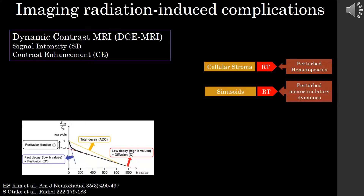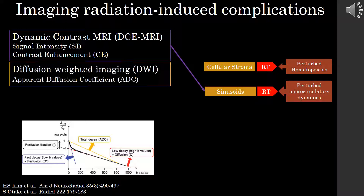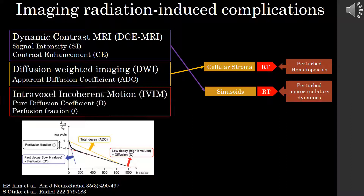Previous studies seeking to image radiation-induced complications used dynamic contrast MRI, whose metrics were signal intensity and contrast enhancement, to look at the perfusion-related effects and changes following RT in the sinusoids. Diffusion-weighted imaging, whose chief metric is apparent diffusion coefficient, looked at the diffusion-related effects and changes following RT in the cellular stroma.